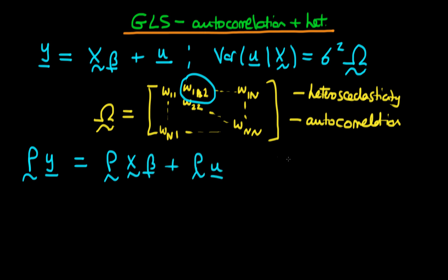What we're going to assume is that the variance of our transformed error, so the variance of P u given X, is going to be equal to sigma squared times the identity matrix. In other words, on our transformed system, we're going to assume that we have homoscedastic errors and that there is no autocorrelation in the errors.